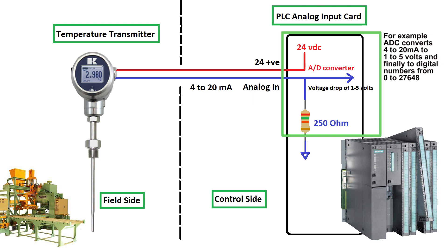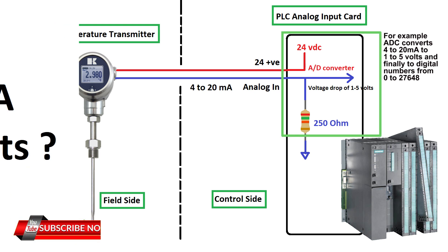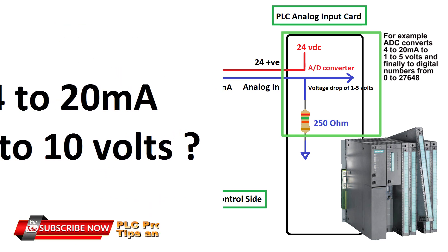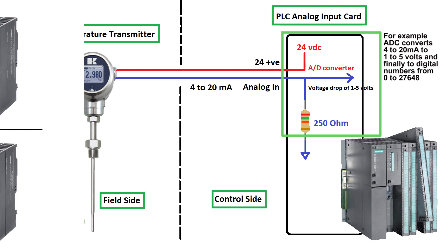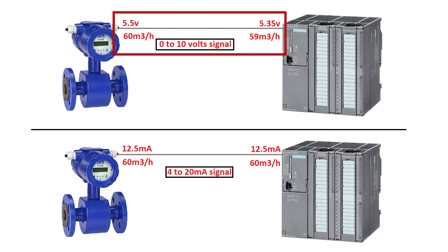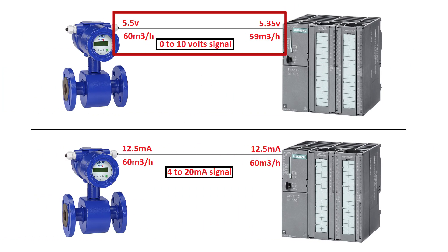Why use a 4 to 20 milliamp current signal instead of a voltage signal? The first main reason is voltage drop: very long cables have resistance and this causes voltage drop which will affect the readings. However, currents do not have this issue.